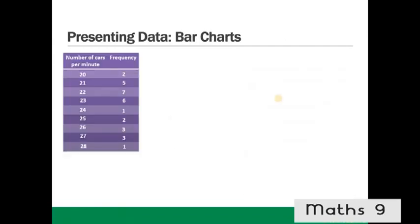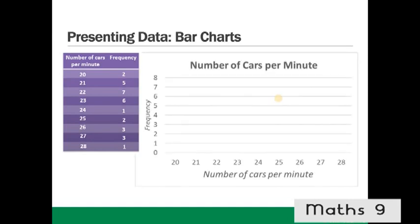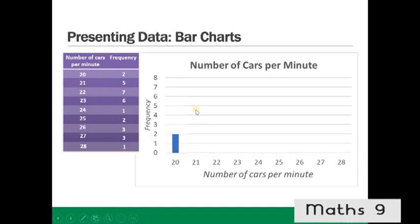Presenting data in bar charts. Using the same example, we can put this in a bar chart with the number of cars per minute along the bottom and the frequency up the side. The frequency for 20 is 2, so the first bar has a height of 2. The frequency for 21 is 5, so the second bar has a height of 5, and so on.